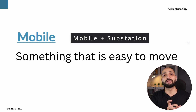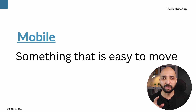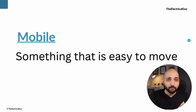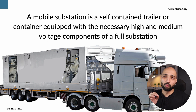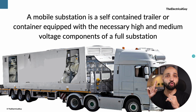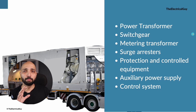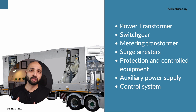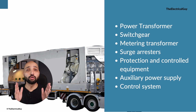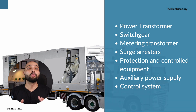So when we add the word 'mobile' with 'substation', does it mean it can be controlled by a mobile device? No, it does not. A mobile substation means a substation that can be moved easily from one place to another. It is a self-contained and autonomous system mounted on a trailer or container, equipped with necessary high and medium voltage components — power transformer, switchgear and disconnect switches, metering transformer, surge arrestor, protection and control equipment, and AC and DC auxiliary power and control systems.